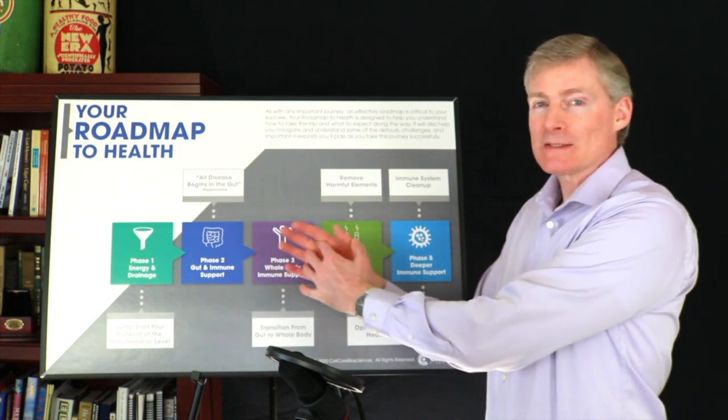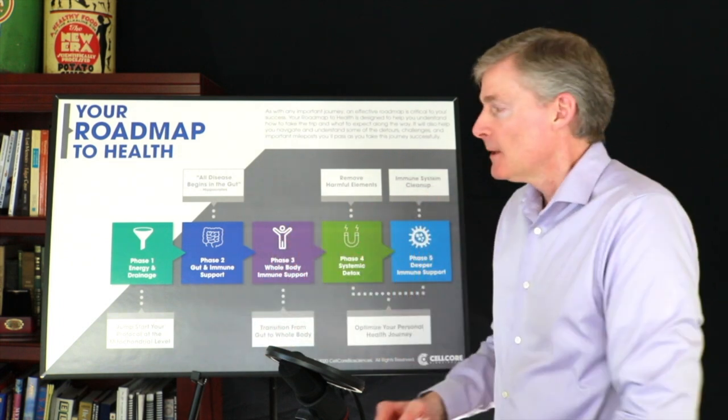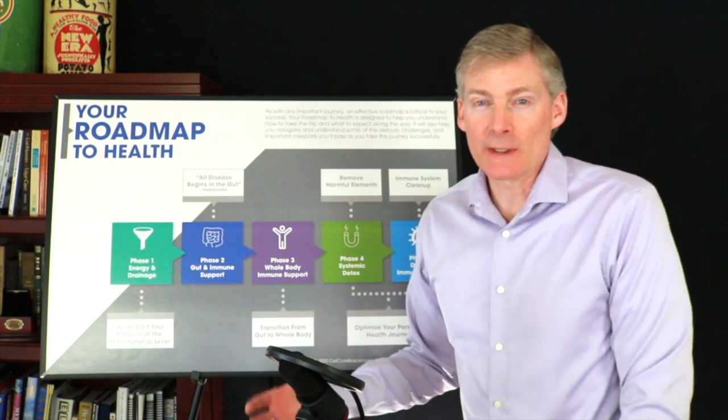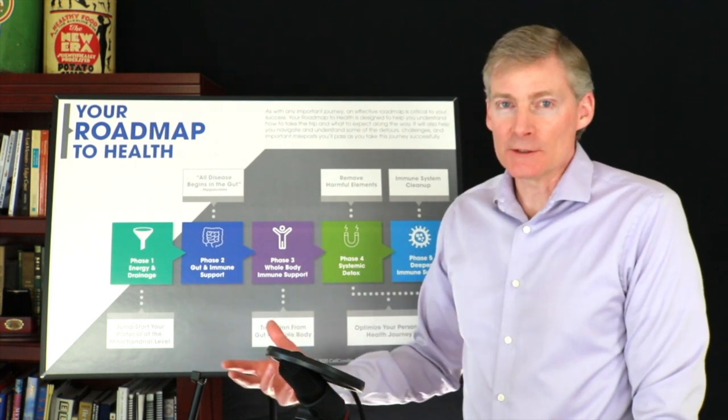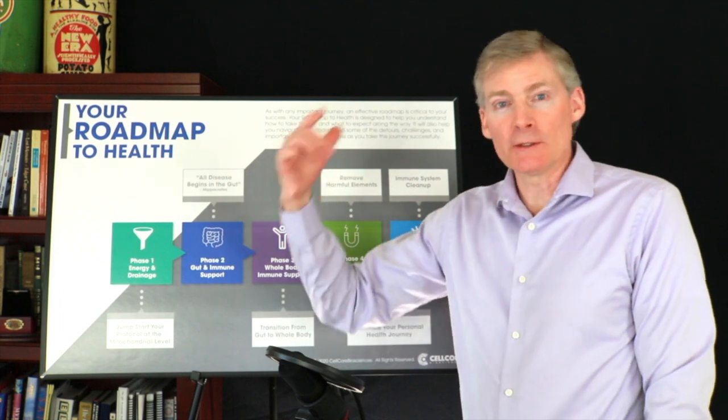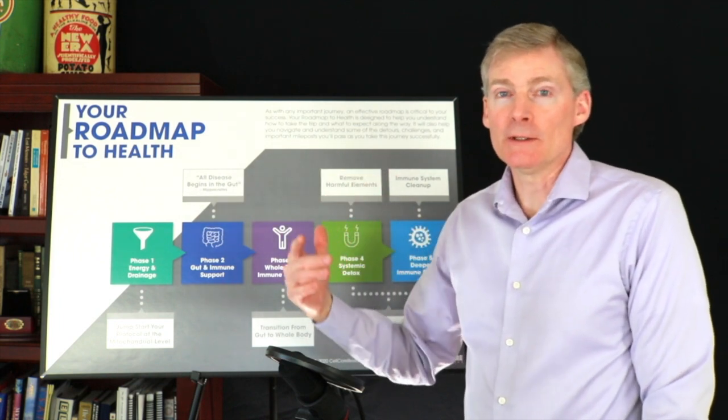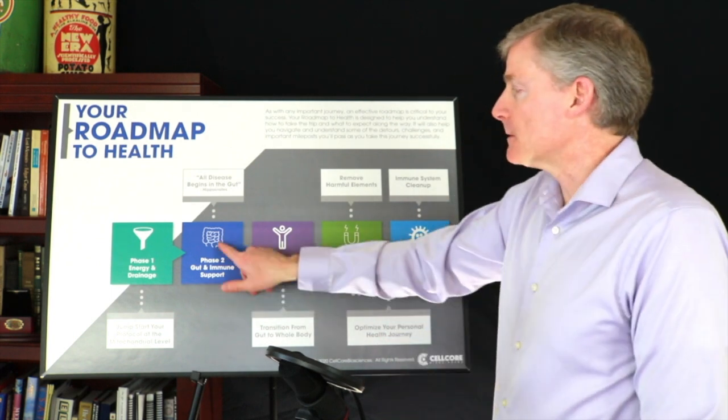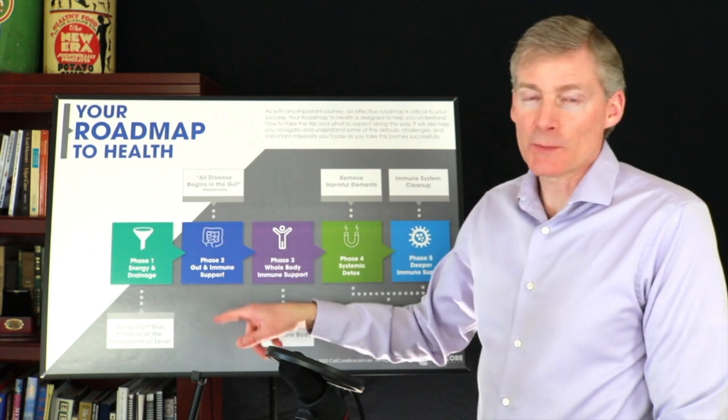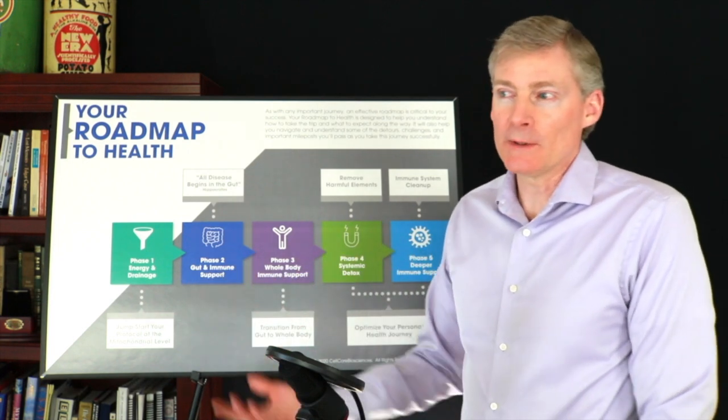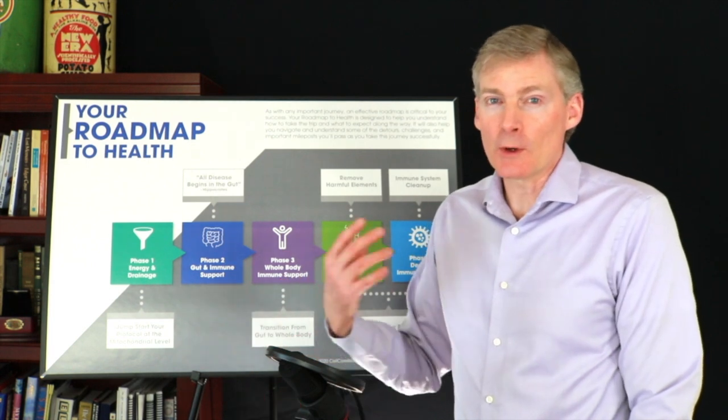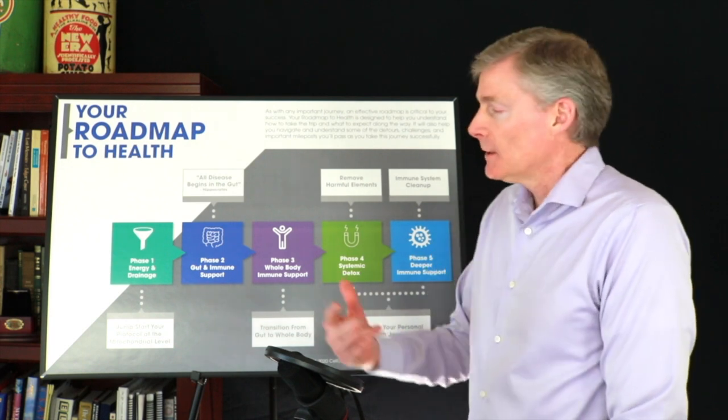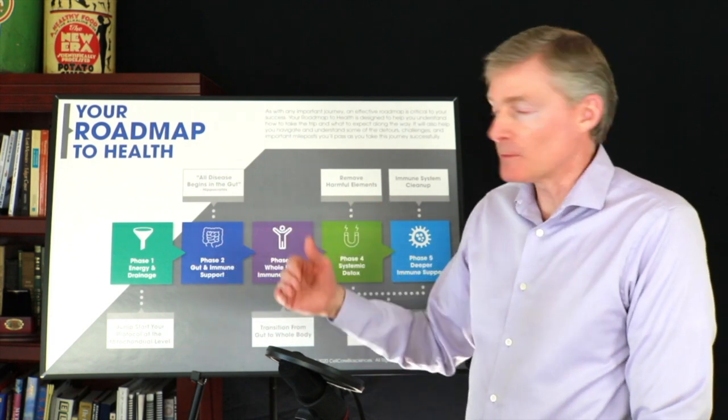The next poster is called Your Roadmap to Health. It's five steps. It says as with any important journey an effective roadmap is critical to your success. Your Roadmap to Health is designed to help you understand how to take the trip and what to expect along the way. It will also help you navigate and understand some of the detours, challenges, and important mileposts you'll pass as you take this journey successfully. This is from Cellcore Biosciences. I actually took this and made it seven steps which will be the next poster. This first step right here says phase one energy and drainage. That means making sure that the mitochondria are making enough ATP. That's energy. And then drainage, that's the inverted pyramid making sure that the organs are naturally cleaning the body. Then you can start phase two which is gut and immune support. They got the best supplements I've ever worked with. I've been at this now almost 30 years. The first time I opened up an article talking about nutrition was October of 1993. Cellcore has the best gut cleaning products I've ever worked with.